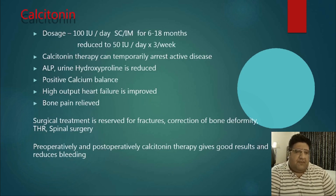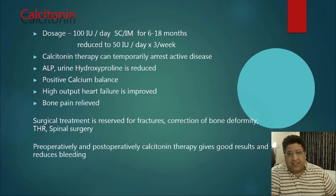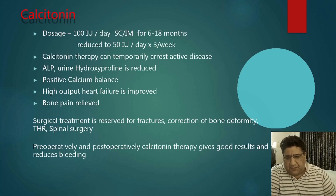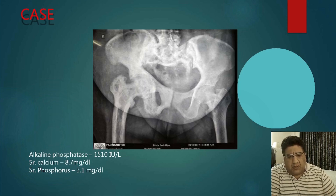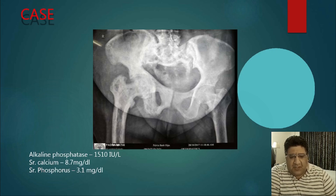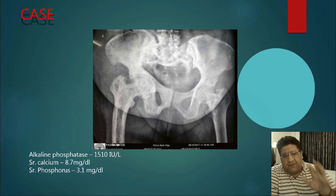The second drug is calcitonin — available as intranasal spray or injection — and it is the drug of choice specifically for pain relief in Paget's disease. Surgical treatment is indicated for deformity, fracture, arthritis, or spinal compression. Post-operative calcitonin certainly helps. A case example: a 61-year-old female presented with back pain, bone thickening, periostitis, compromised right hip with extensive diffuse thickening, and ALP of 1510 — approximately 10 times normal — confirming Paget's disease.